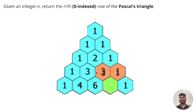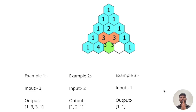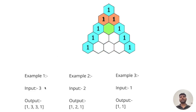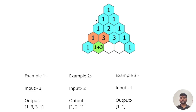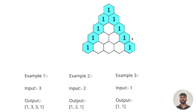Now let's look at some sample inputs and outputs. In the first example, we are given input as 3, so we need to return the third row of Pascal's Triangle. This is the zeroth row, this is the first row, this is the second row, and this is the third row. So we need to return [1, 3, 3, 1] as an array.